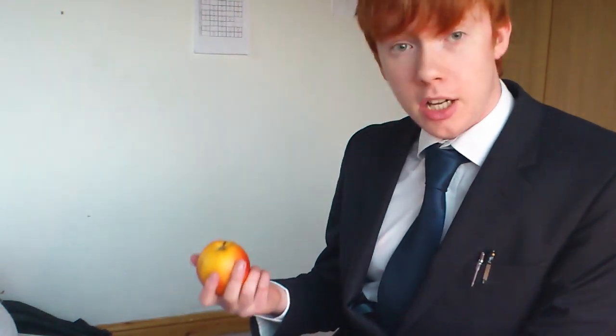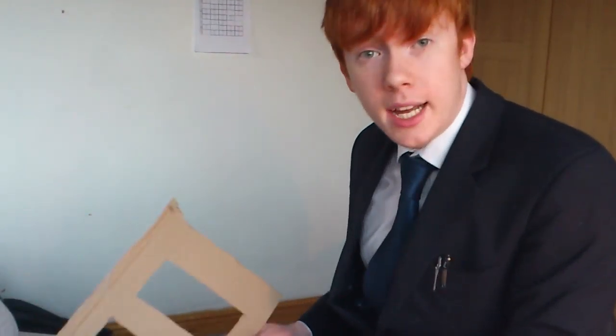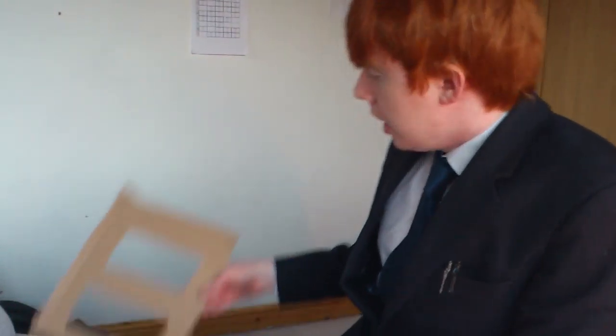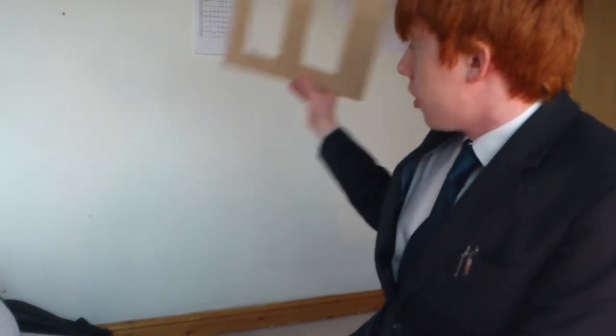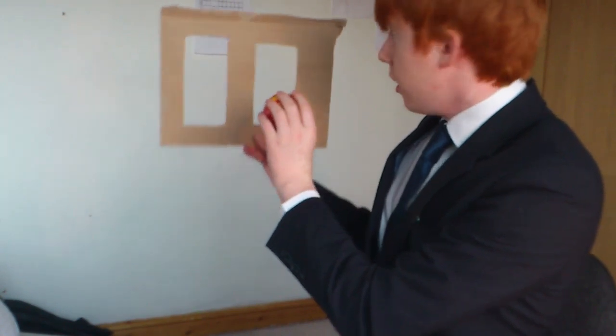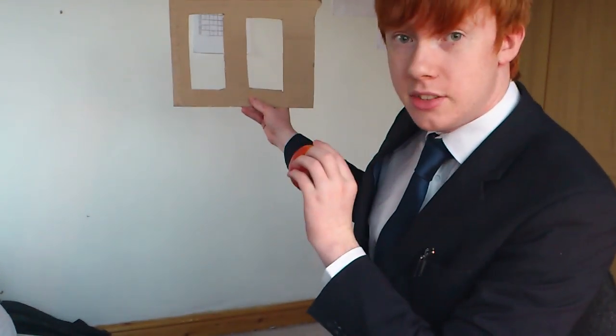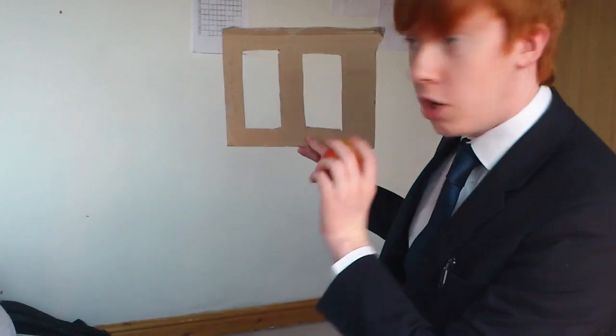Say this apple was a particle or photon, electron — anything very small like that — and we have these two slits. Now, in classical mechanics, which we are all used to, ignoring gravity, when I throw this apple through these slits, there are only two slits of places that they could be up on the wall.